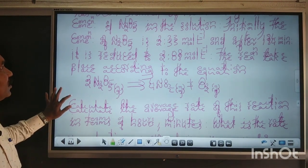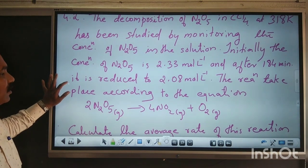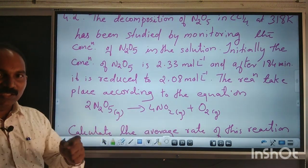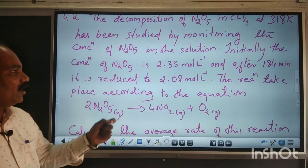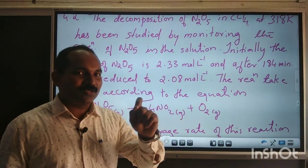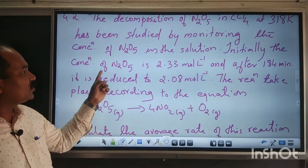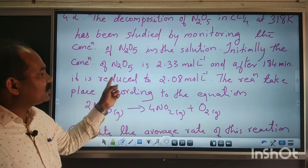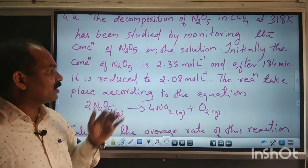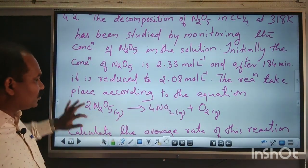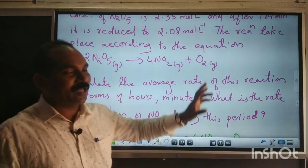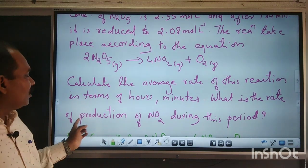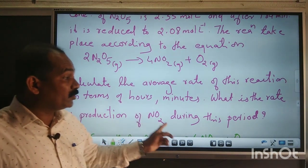The next question is: what is the rate of production of NO₂ during this period? This is the question given in the textbook. The decomposition reaction of N₂O₅ gives nitrogen dioxide and oxygen. The change in concentration is monitored at regular intervals. Initially — meaning time T₁ equals zero — the concentration of N₂O₅ is 2.33 mol/L. After 184 minutes, the concentration is reduced to 2.08 mol/L. Calculate the average rate of the reaction in terms of hours, minutes, and seconds.